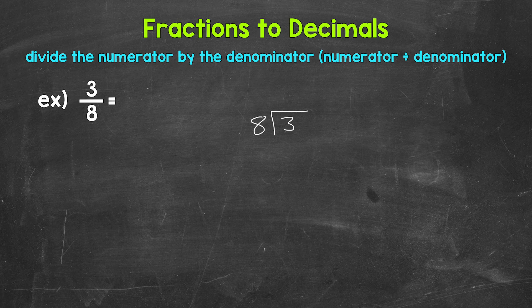So we have 3 divided by 8. How many whole groups of 8 in 3? How many eights in 3? Well, we can't do that. So we need a decimal and a zero in order to work through this, and I'm going to extend the division bar as well.